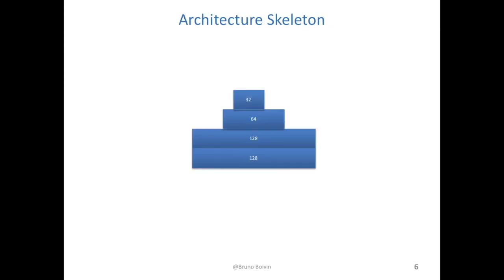A first basic CNN classifier was built based on the cat and dog classifier presented in a textbook called Deep Learning with Python from Chollet. Starting from there, the architecture was modified — layers were added and the hyperparameters were fine-tuned to achieve optimal performance.